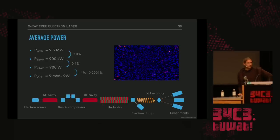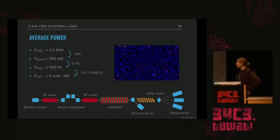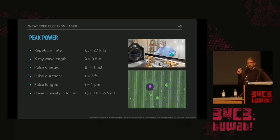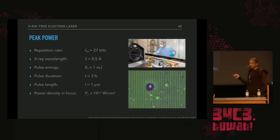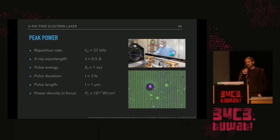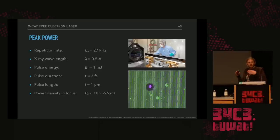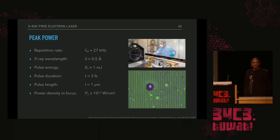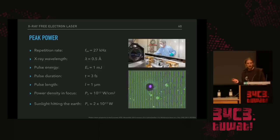The interesting parameter is the peak power. In average we have a repetition rate of 27 kilohertz — 27,000 X-ray pulses per second — with a wavelength of about 0.5 angstrom, a pulse energy of 1 millijoule, and a pulse duration down to 3 femtoseconds. That's the time it takes light to travel one micrometer. We can focus this X-ray beam down to a very narrow spot, and at the focus point we have a power density of about 10^17 watts per square centimeter — about the power density of the total sunlight hitting the Earth concentrated on one square centimeter. This is really intense, and you have to be careful if you accidentally hit something.